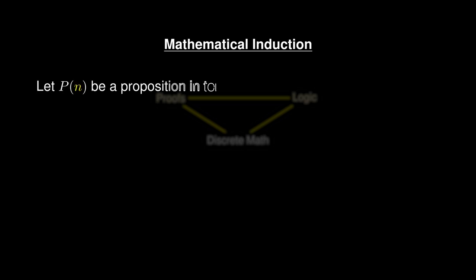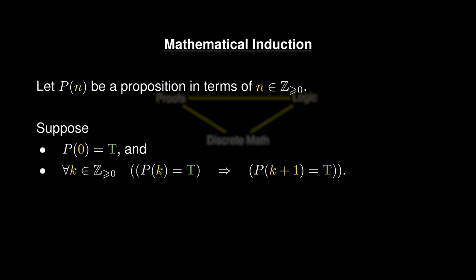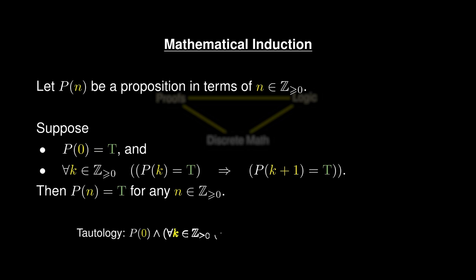Another useful technique is mathematical induction. Suppose we know that the proposition holds when n equals 0, and suppose we know that whenever a proposition holds for k, it holds for the following number k plus 1. Combining these two premises, we can conclude that P(n) must hold for any non-negative integer n.